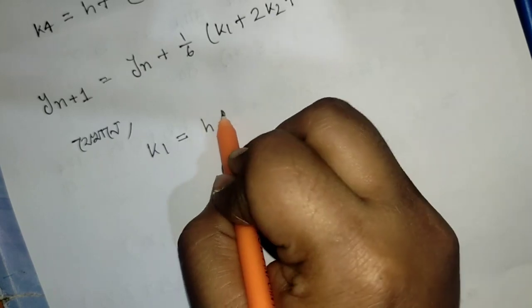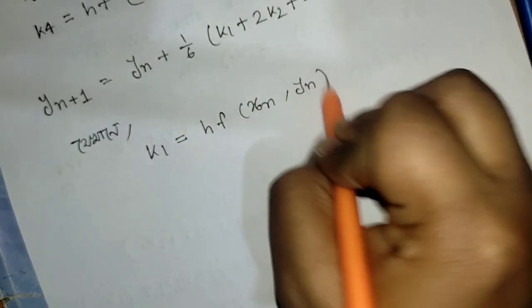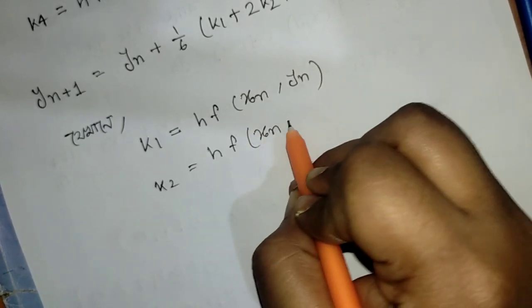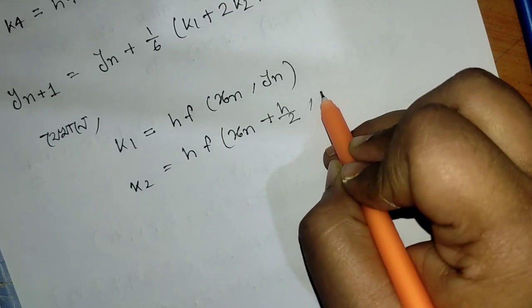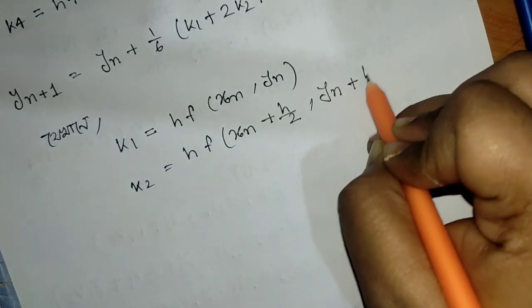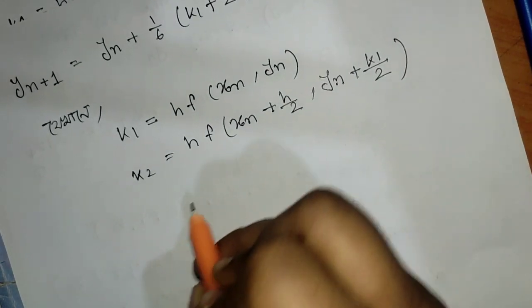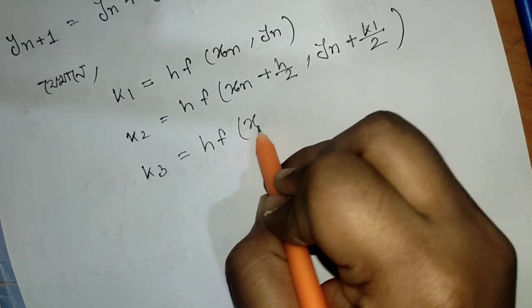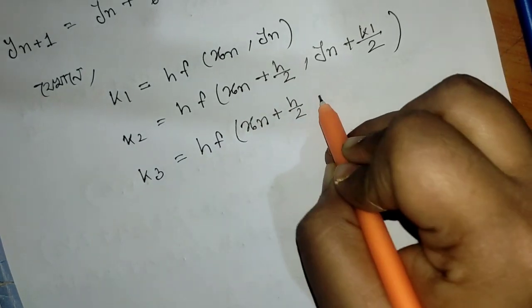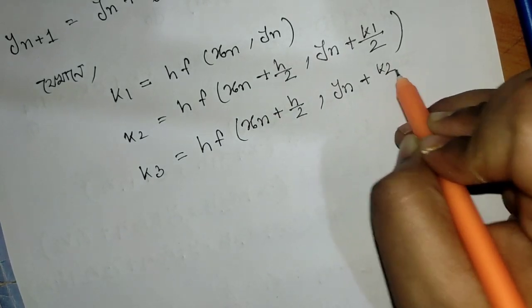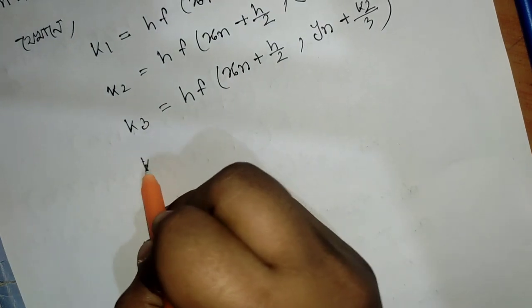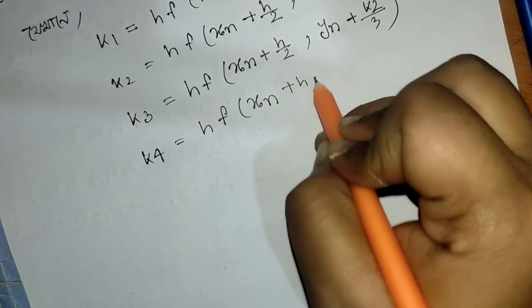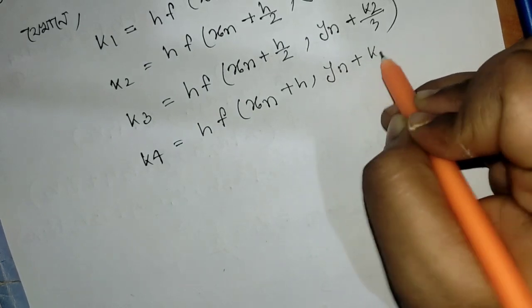k1 is h times f of xn comma yn. k2 is h times f of xn plus h by 2 comma yn plus k1 by 2. k3 is h times f of xn plus h by 2 comma yn plus k2 by 2. k4 is h times f of xn plus h comma yn plus k3.